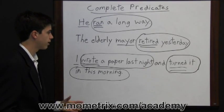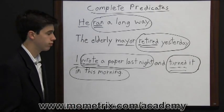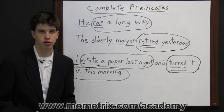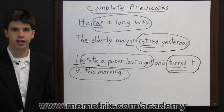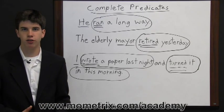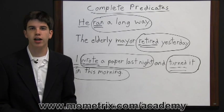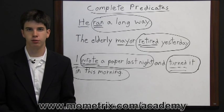Sometimes sentences are going to have two complete predicates. The important thing to remember is that a complete predicate consists of the verb and any words that modify or further explain the verb.